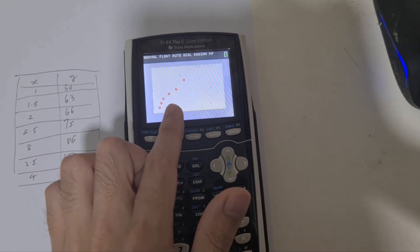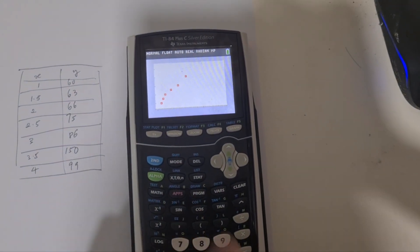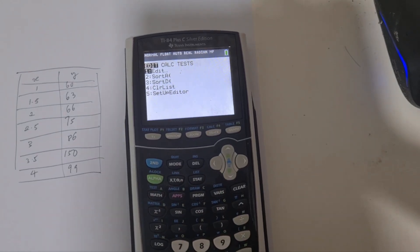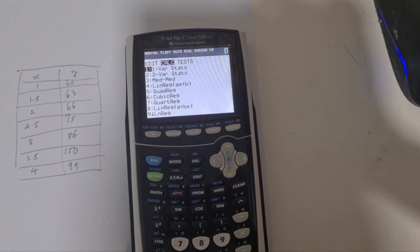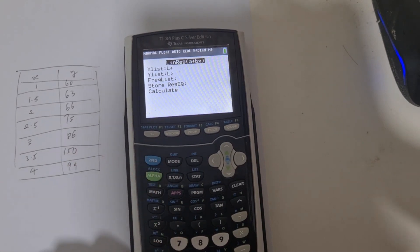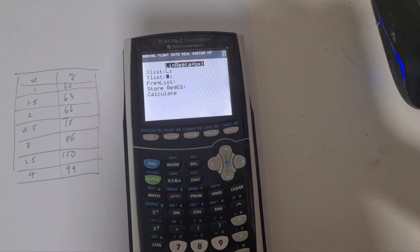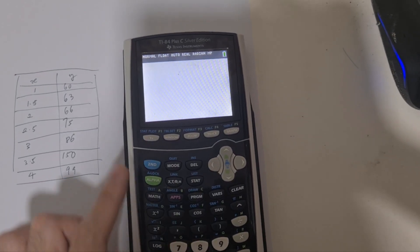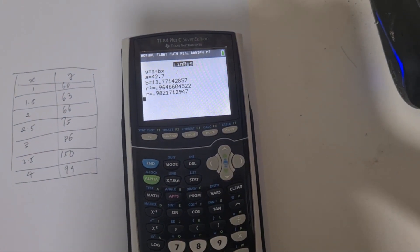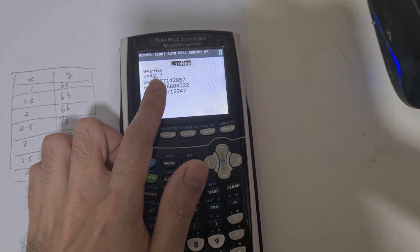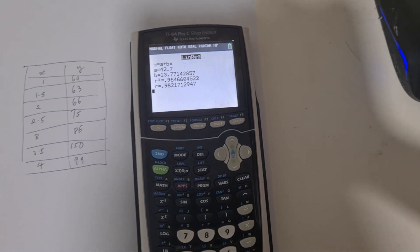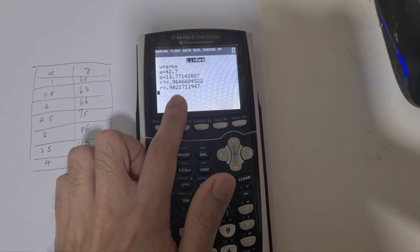From here you can find the regression line by clicking stats, then calculate, then number 8. My x list is L1, so that's second function button number 1, and y list is second function button number 2. Then calculate to find the regression y = a + bx. My y-intercept is 42.7, my gradient is about 13.77, and my product moment correlation coefficient is 0.982.